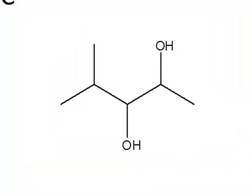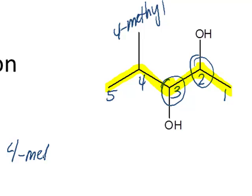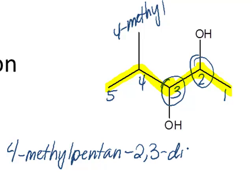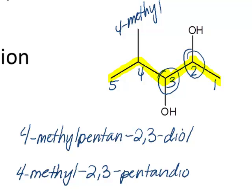To name this molecule, start by determining the backbone, making sure both OH groups are touching it. When numbering, give the OH groups priority and assign the lowest numbers possible — numbering from the right side in this case. This gives an alcohol on the second carbon and third carbon, as well as a methyl group on the fourth carbon. One way to write the name is 4-methyl-pentane-2,3-diol, using a number for each alcohol location and the prefix 'di' to indicate two alcohols. Alternatively, as your textbook tends to do, you could write 4-methyl-2,3-pentanediol. Either one is completely acceptable.